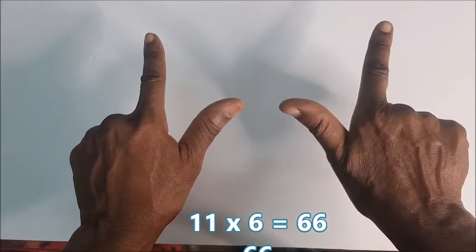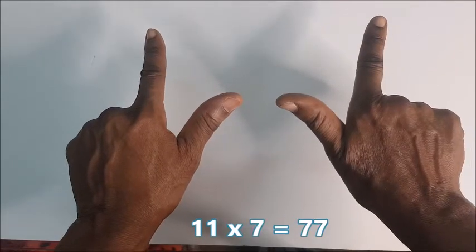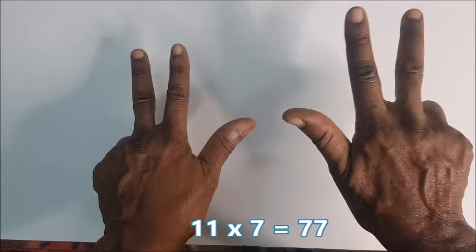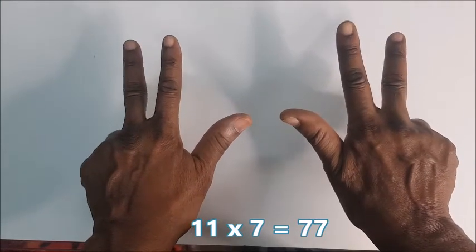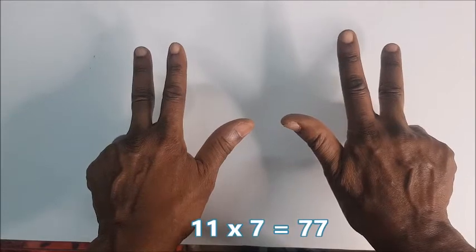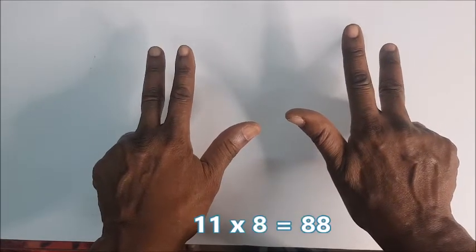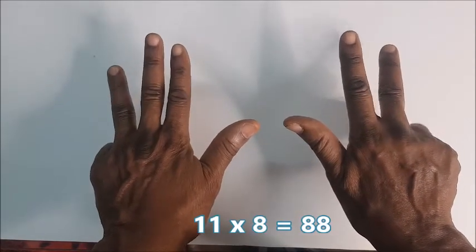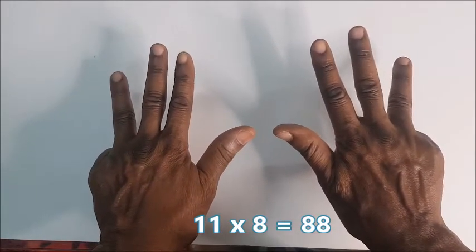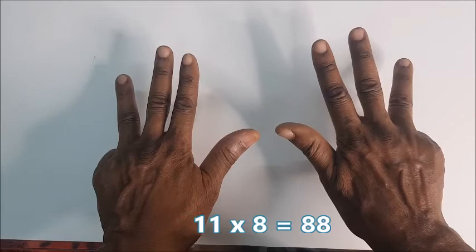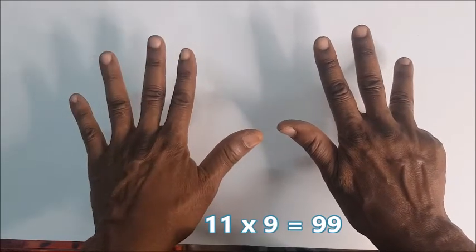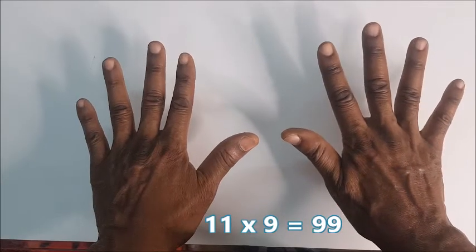11 times 7, you shoot up the left as the same then one, so 11 times 7 is 77. 11 times 8, you shoot up here, you shoot up here. 11 times 9, you shoot up here, 11 times 9 is 99.